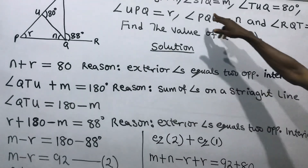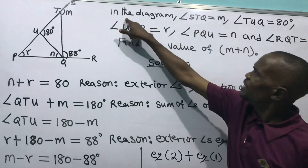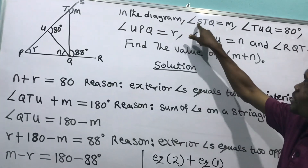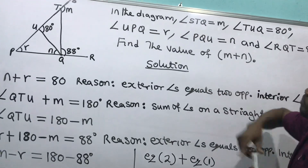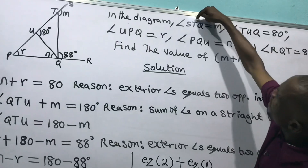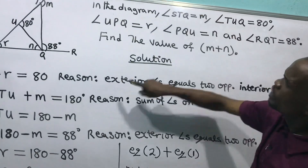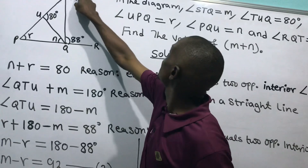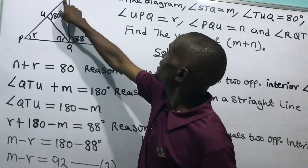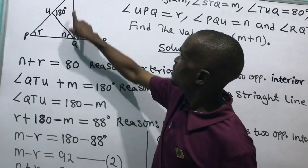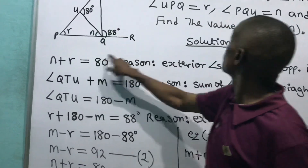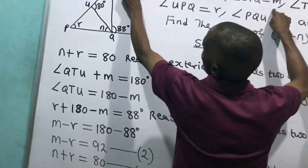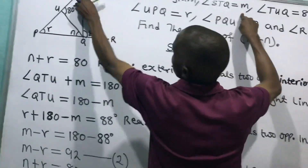What does this mean? In the diagram, angle X-T-Q — the real angle here is the angle at T. Look at X-T-Q. Angle X-T-Q is M. That means this angle is called angle X-T-Q.